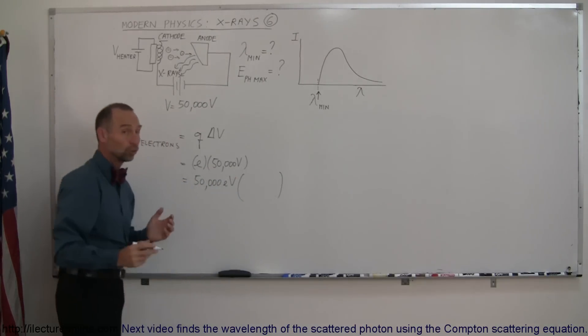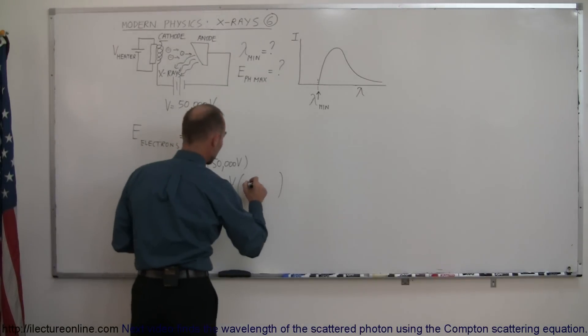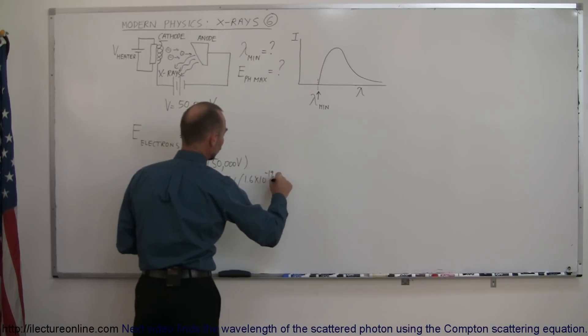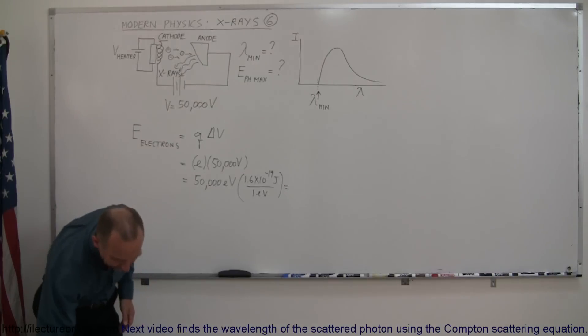Converting that to joules which is probably something we need to do. So that would be 1.6 times 10 to the minus 19 joules per one electron volt. And let's see here, I do have a calculator handy.